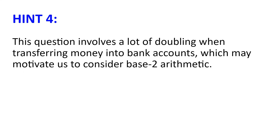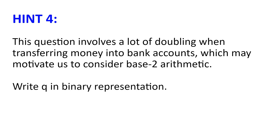Hint number four: This question involves a lot of doubling when transferring money into bank accounts, which may motivate us to consider base two arithmetic. Consider writing Q in binary representation: Q equal to 2 to the power of 0 times N0 plus 2 to the power of 1 times N1 plus 2 to the power of K times Nk, where each of N0, N1, N2, all the way to Nk are either 0 or 1.